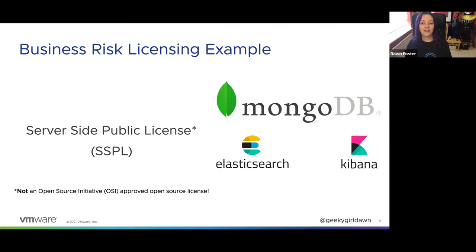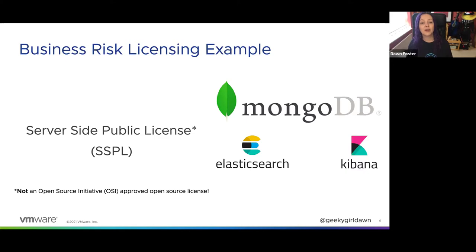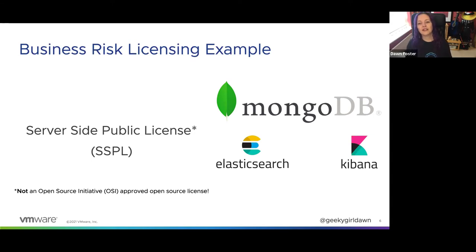Licensing changes are one thing that can increase business risk, especially when an open source project is controlled by a single company. In 2018, there were high-profile examples of companies like Redis Labs and MongoDB, who became fed up with cloud providers selling software-as-a-service offerings based on these open source projects without giving back as much as the companies would have liked. Their solution was to put more restrictive licenses on their software. In the case of MongoDB, they created a new license called the Server Side Public License, used for MongoDB and also for security patches for previous open source versions.